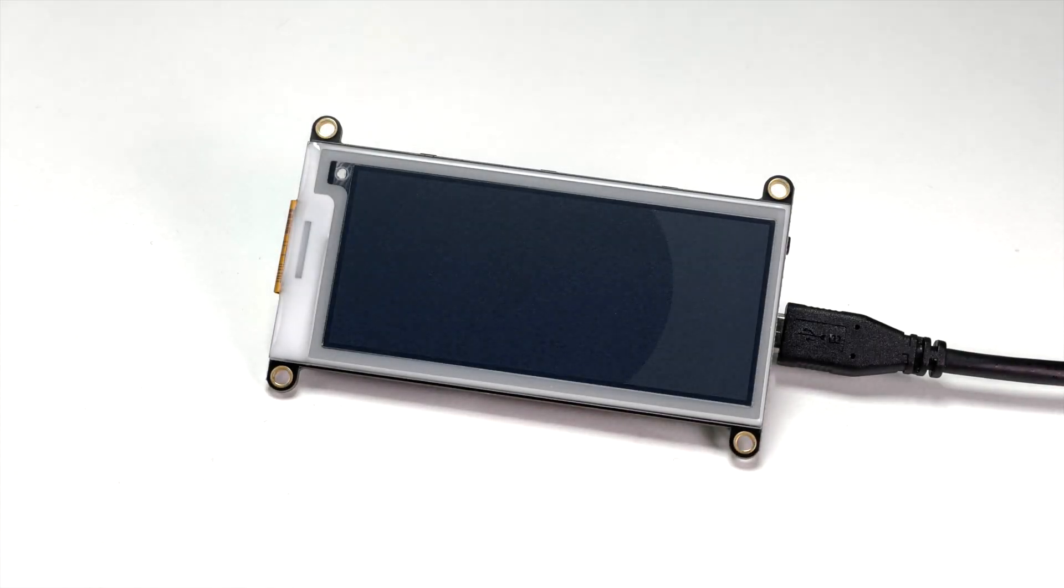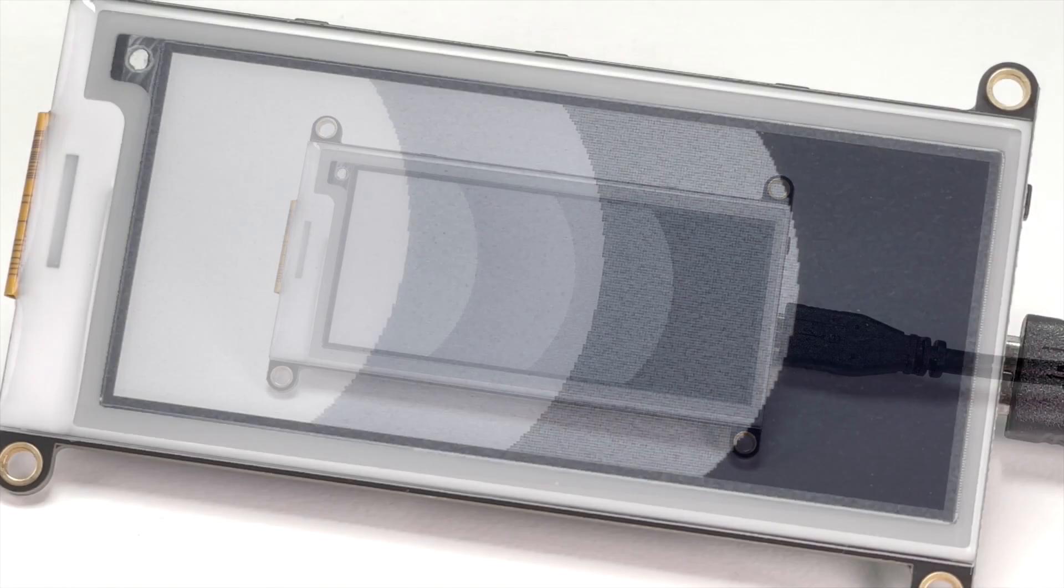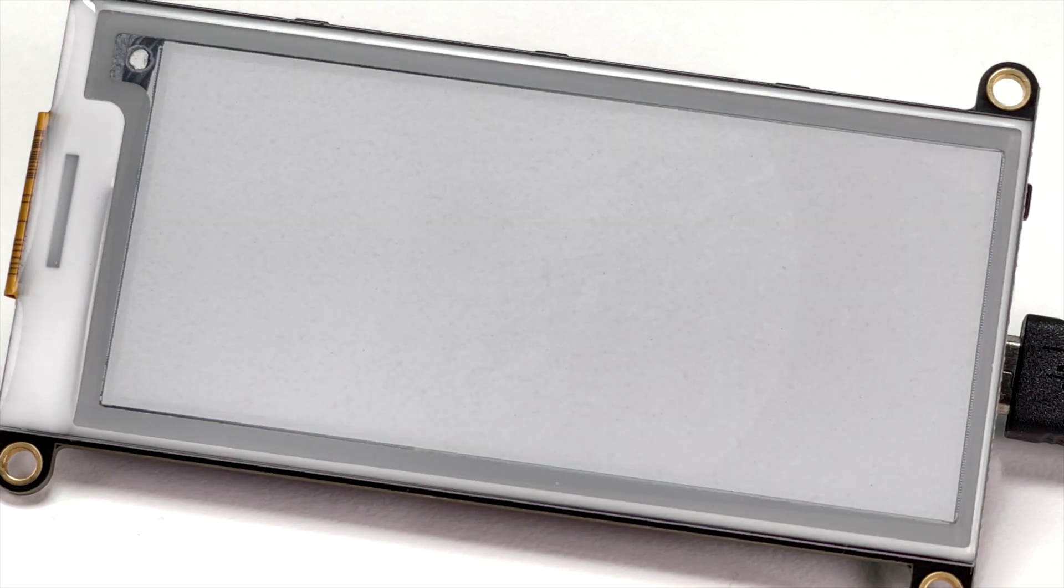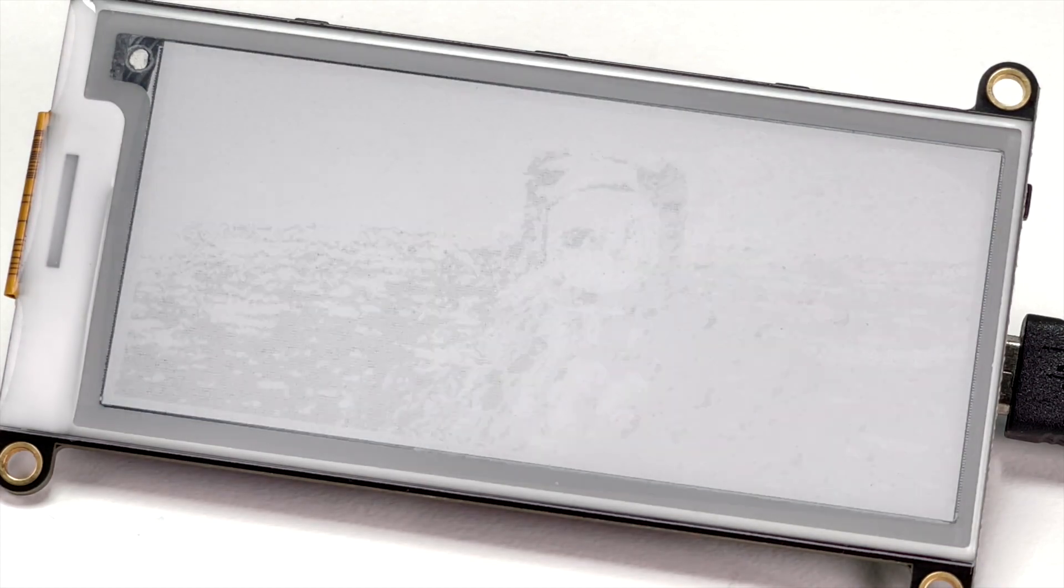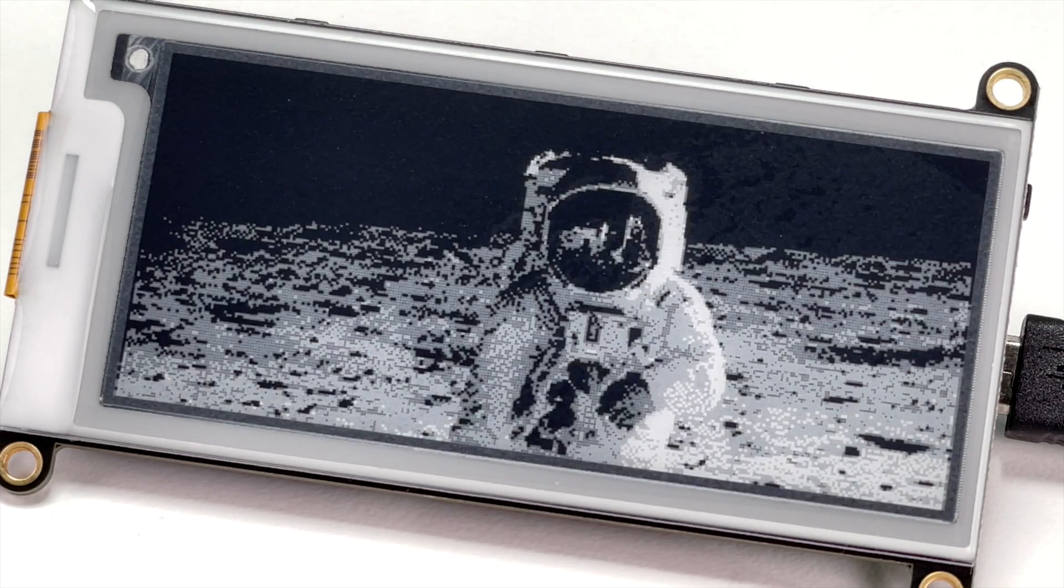Grayscale EPDs can display multiple levels of gray by mixing black and white pigments. They're basically monochrome EPDs with additional calibration, allowing them to control pigments with more precision and take advantage of e-ink's underlying analog nature.